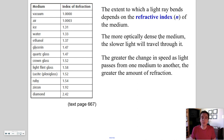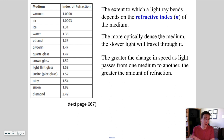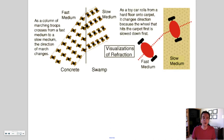The extent to which a light ray bends depends on what we call the refractive index, symbolized by lowercase n, also called the index of refraction. The more optically dense a medium, the slower light travels through it. For example, light passing from air into diamond will slow down a lot more than from air into water, because diamond is a very dense material. The greater the change in speed, the greater the amount of refraction — like soldiers entering very deep mud change direction more drastically than entering tall grass.